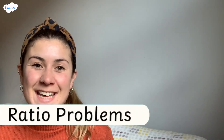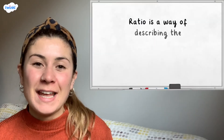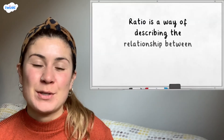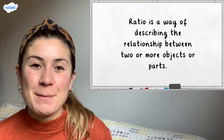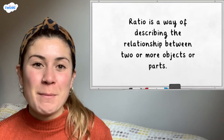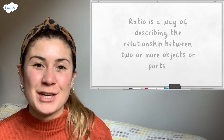This video is here to help you solve ratio problems. Ratio is a way of describing the relationship between two or more objects or parts. If you haven't already, it might be useful to go back and watch our videos explaining ratio language and the ratio symbol first. In this video we're going to be looking at different representations that can be used to help solve ratio problems.